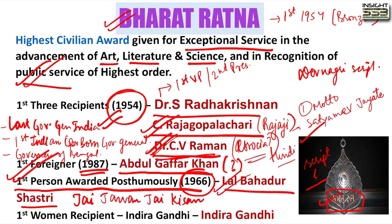The famous slogan 'Jai Jawan Jai Kisan' was given by Lal Bahadur Shastri, who was our second Prime Minister. He also promoted the White Revolution (supported Amul) and the Green Revolution in 1965.